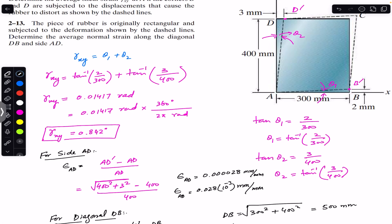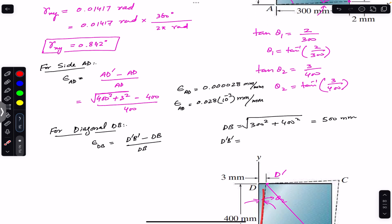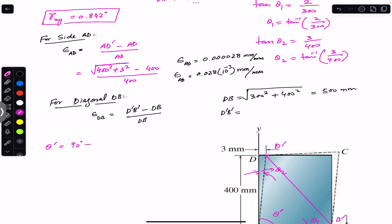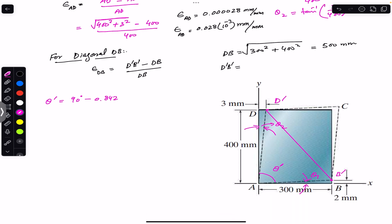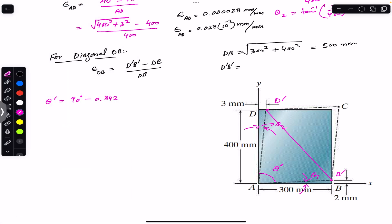To find D-dash B-dash we use the law of cosines, which requires knowing the included angle theta-dash at vertex A. Since the initial angle between x and y was 90° and the change was gamma_xy = 0.842°, theta-dash equals 90° − 0.842°, which gives 89.158 degrees.